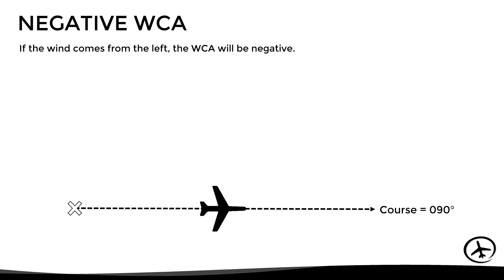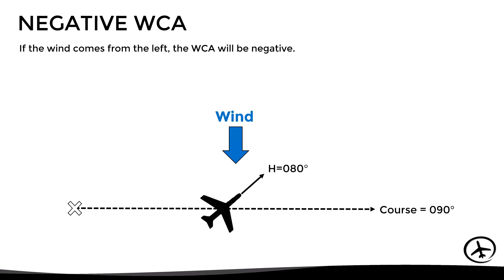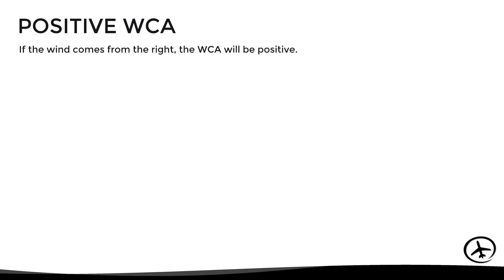Here we have a desired course of 090 degrees. If there is no wind, there is no need to correct for drift, so the heading would also be 090. If there is a crosswind from the left, the nose must point slightly into the wind — let's say to heading 080. The wind correction angle is 10 degrees, but since the current heading is less than the desired course, we say the WCA is negative. This will always happen with a crosswind from the left.